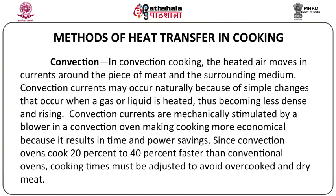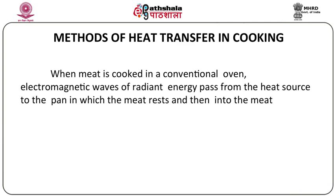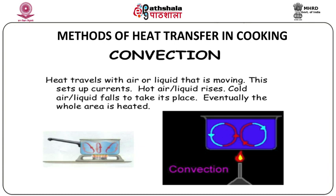When cooking meat in a convection oven, be careful to adjust the time and temperature to avoid overcooking the meat, because overcooked meat can become dry and affect its cooking quality. When heated air or liquid is moving, the convection currents are set up — hot air or liquid rises and cold air or liquid falls to take its place. Eventually the entire area gets heated up.